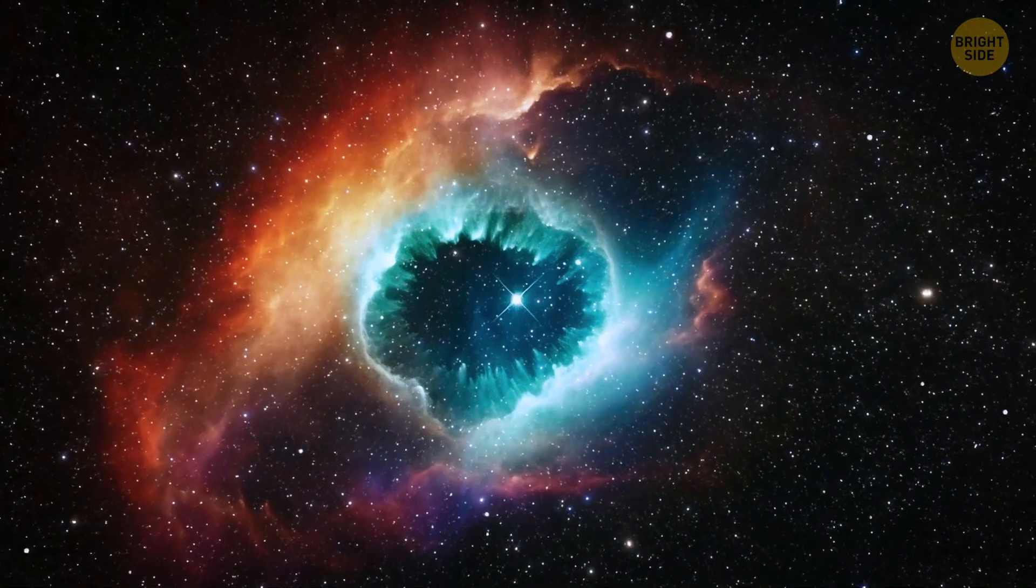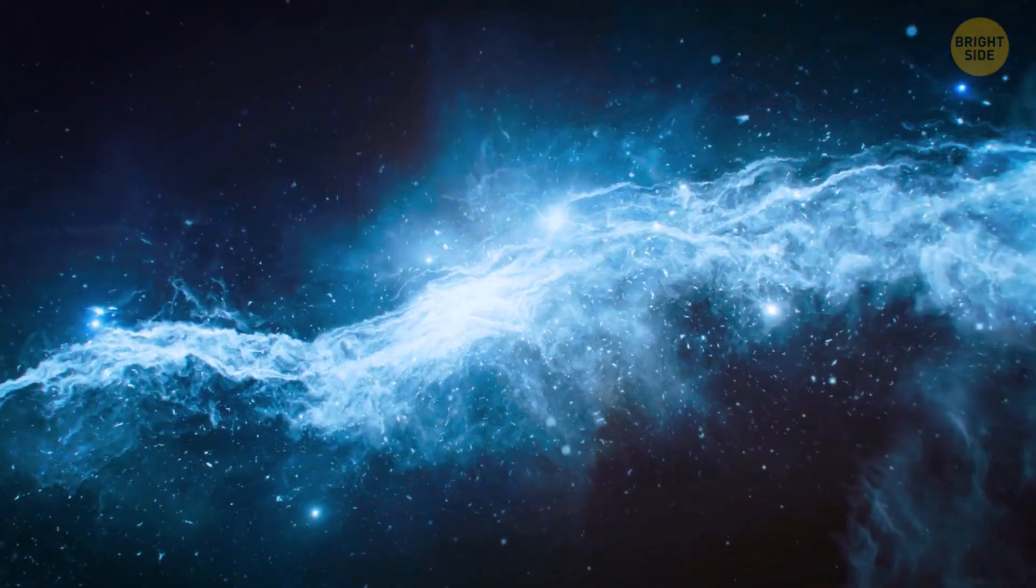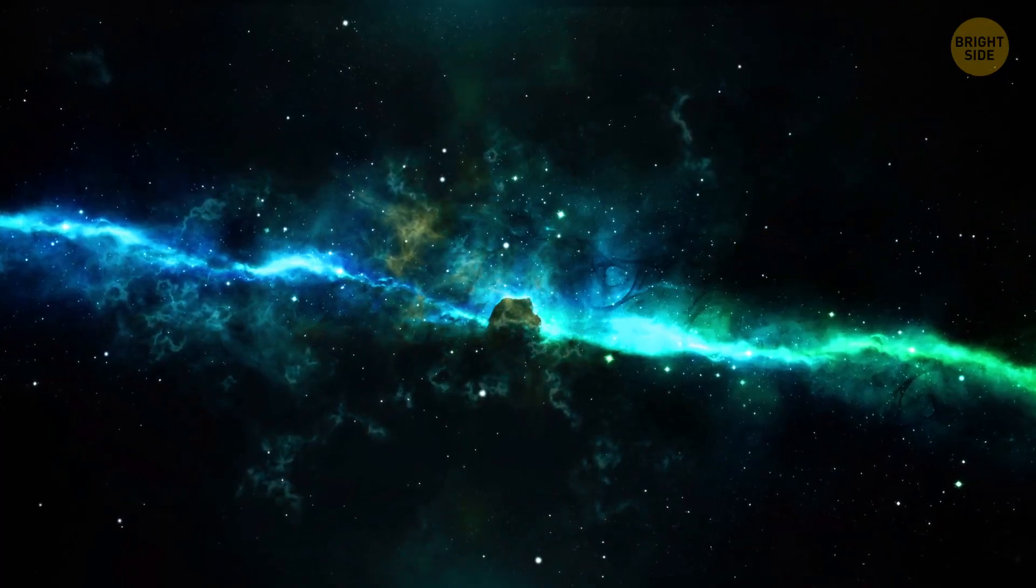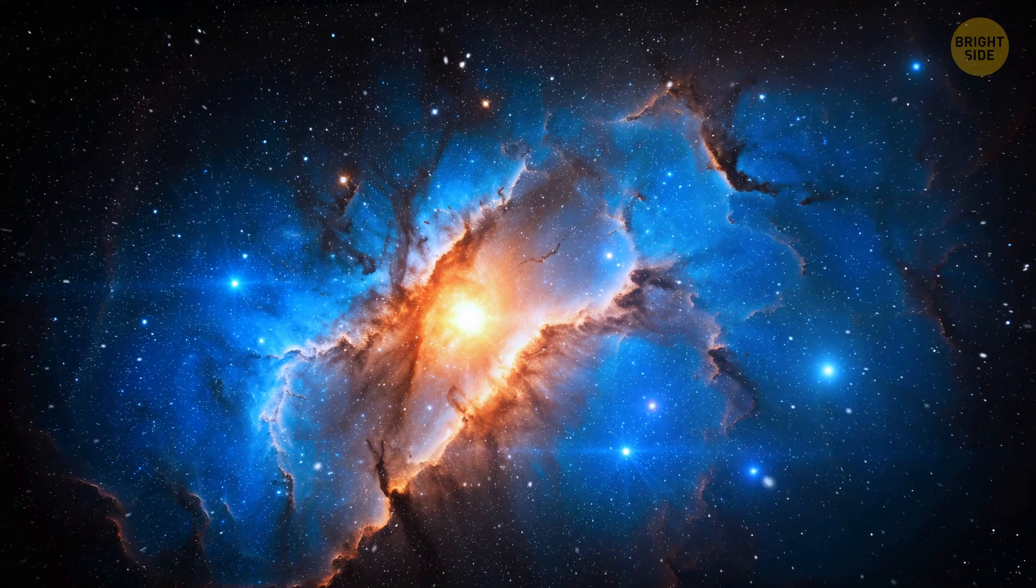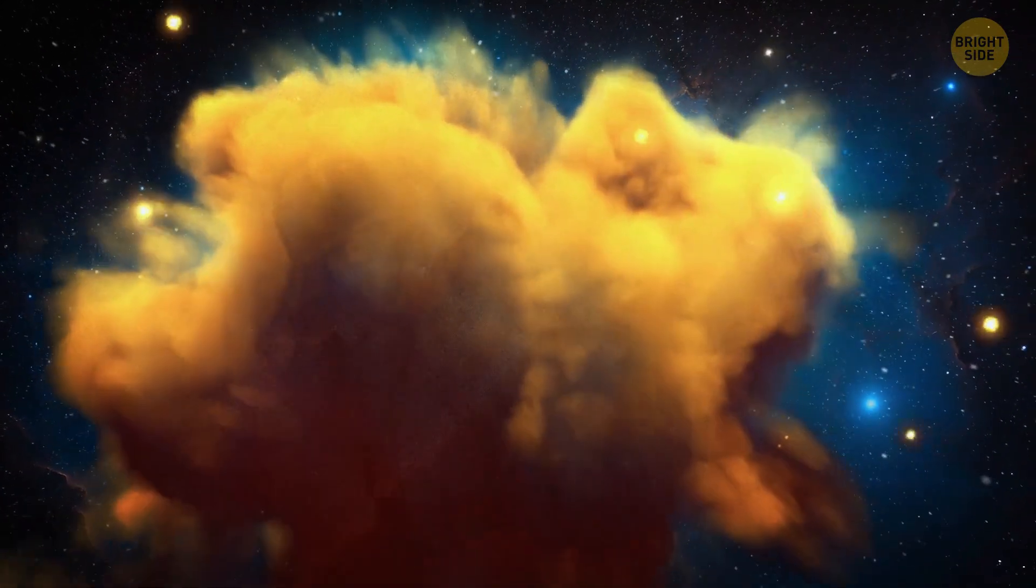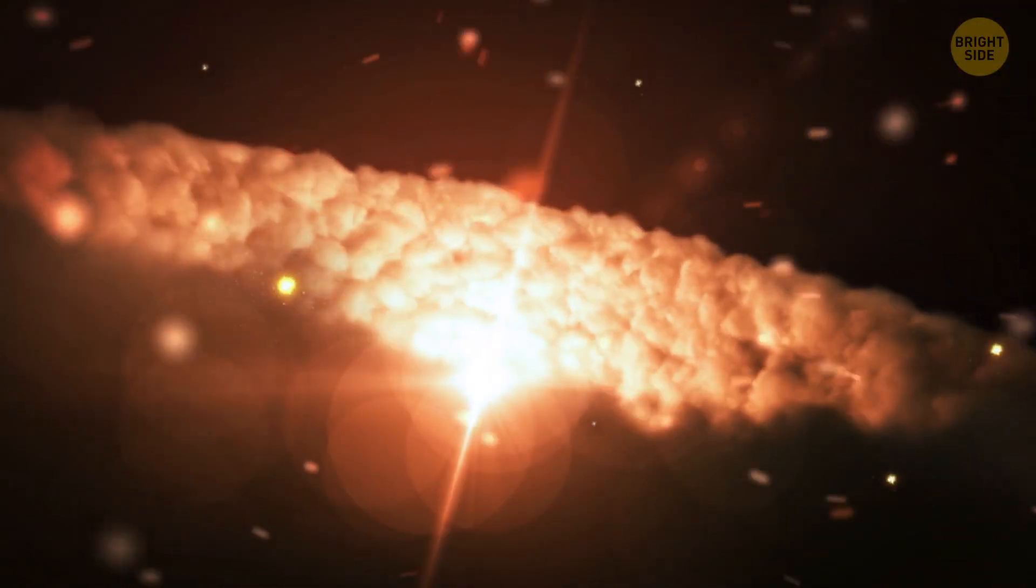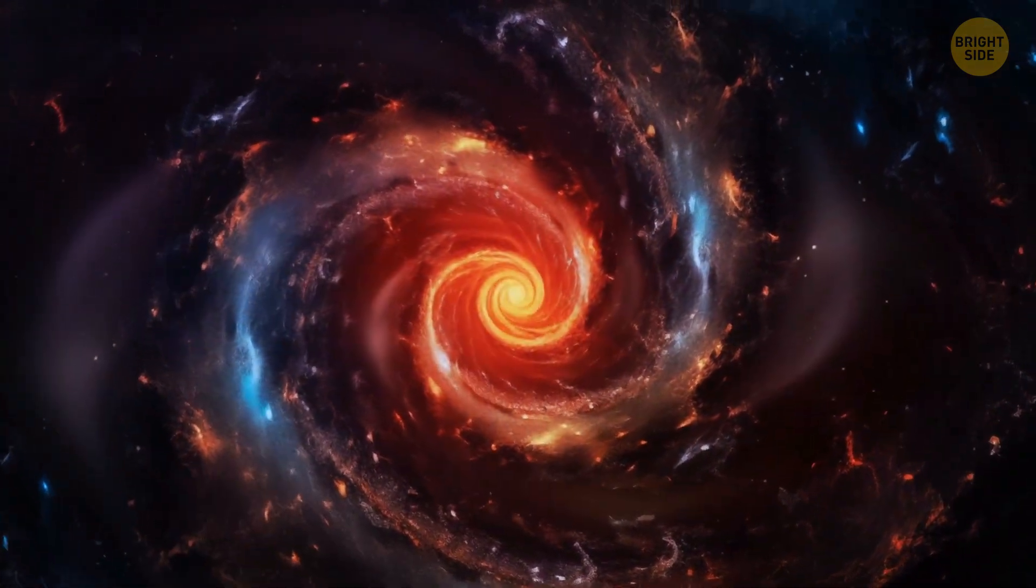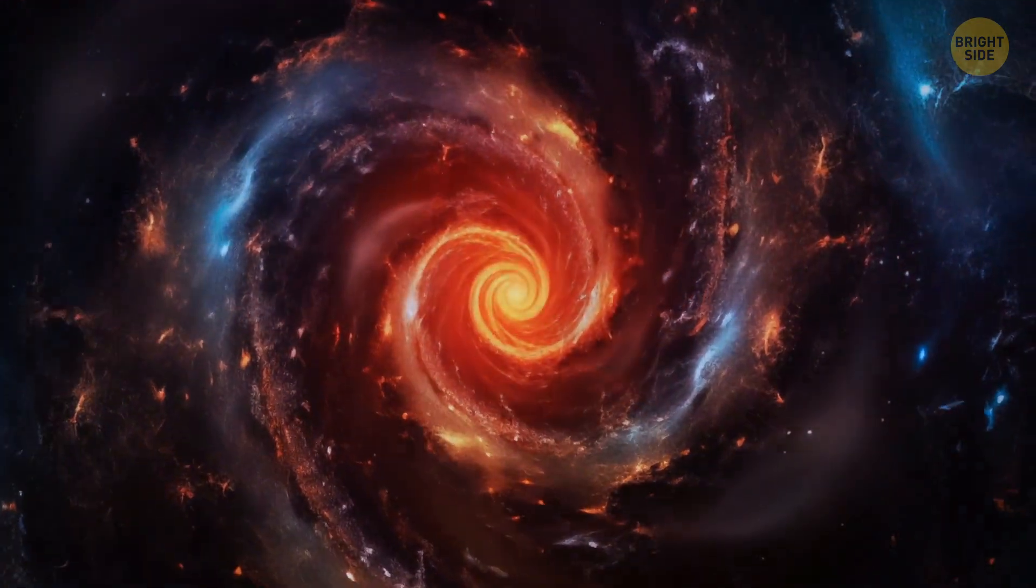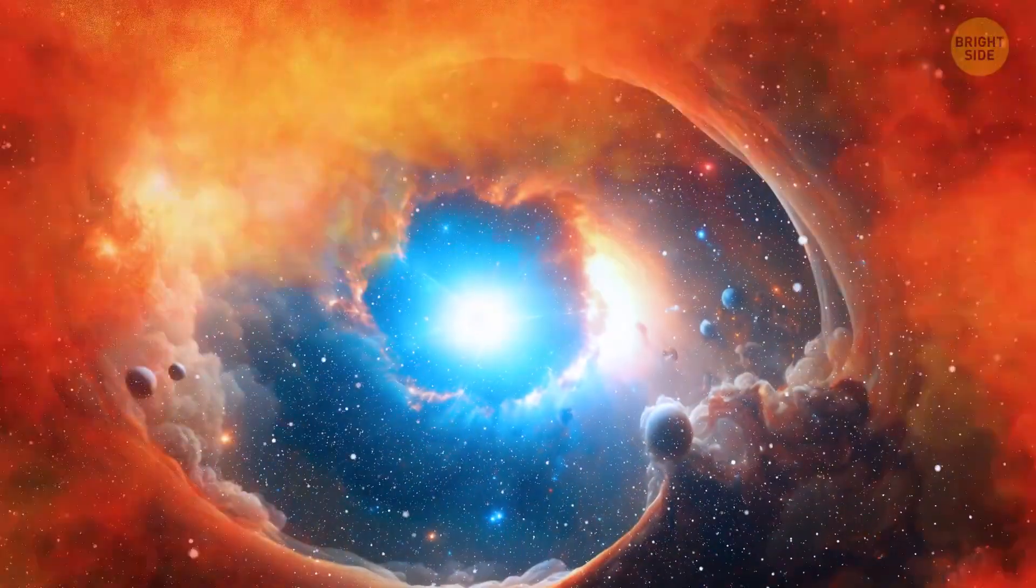Nebulas are gigantic clouds of gas and dust, and some of them can have really unusual shapes, as if they were made this way on purpose. With time, gravity starts to pull these clumps of dust and gas together. They grow larger and larger, and their gravity gets more powerful. One day, this mass becomes so big that it collapses under its own gravity and forms new stars.